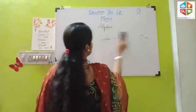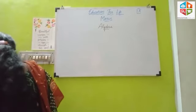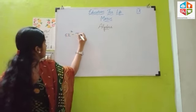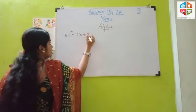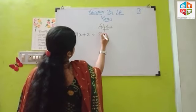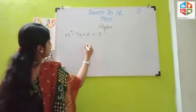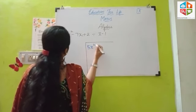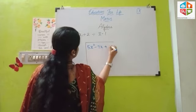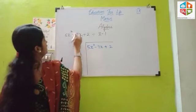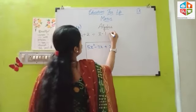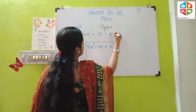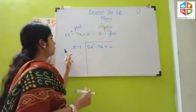Now we will move on to the problem. Given 5X squared minus 7X plus 2 is divided by X minus 1. The divisor is X minus 1. It will be P of X, and the divisor will be G of X.